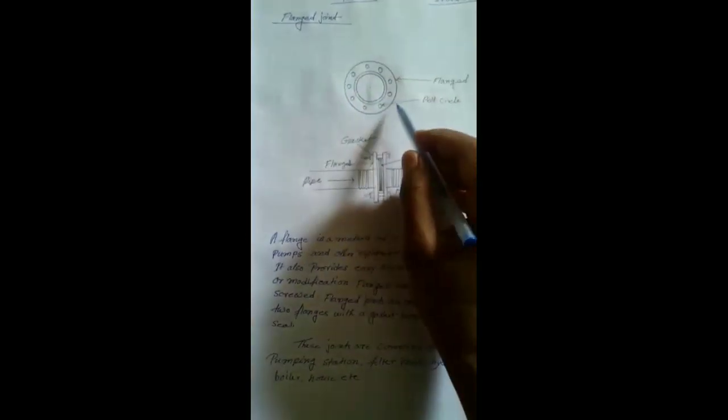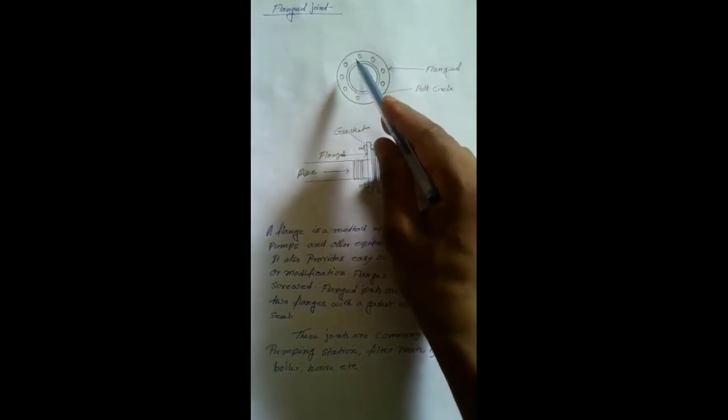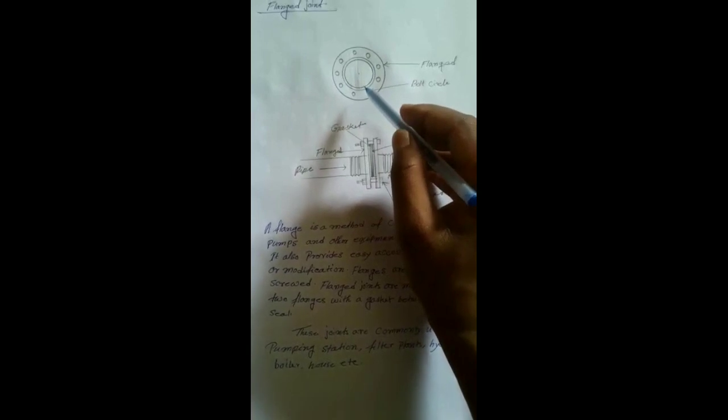What is a flange? A flange is a ring with nuts and bolts.